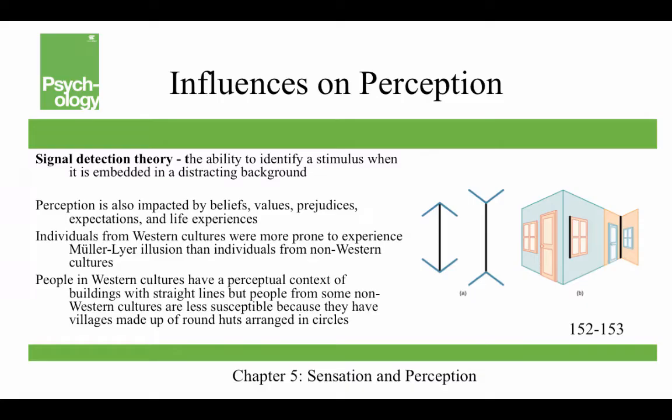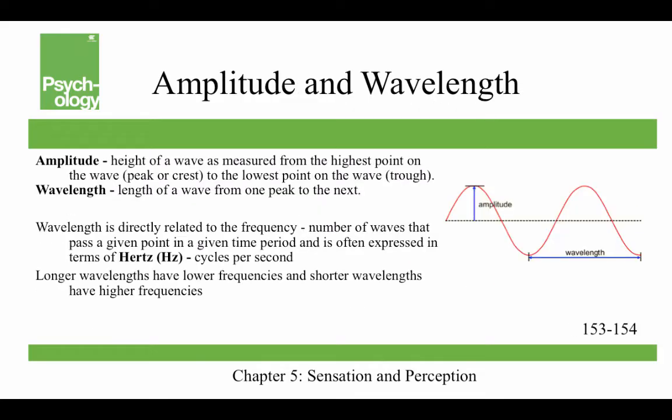Research has found that individuals from Western cultures are more prone to experience the Mueller-Lyer illusion than individuals from non-Western cultures. The thought is that people in Western cultures have a perceptual context of buildings with straight lines, but people from some non-Western cultures are less susceptible because they have villages made up of round huts arranged in circles — such as the Zulu people of South Africa.